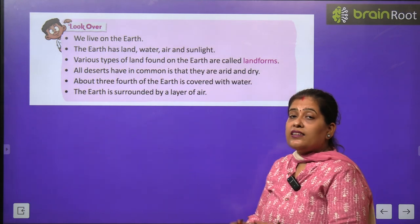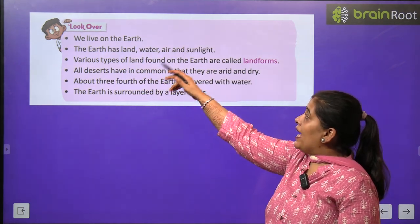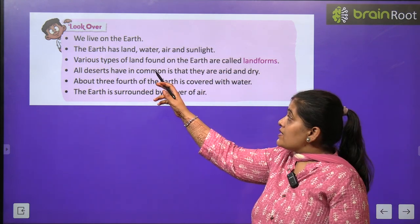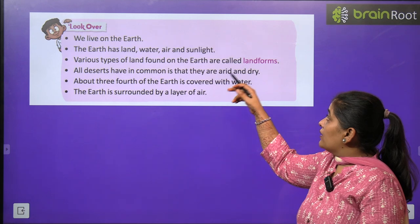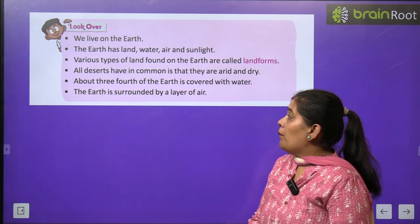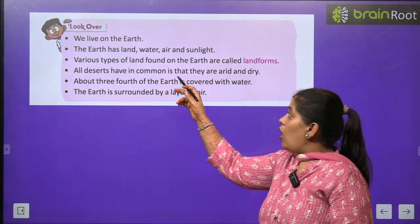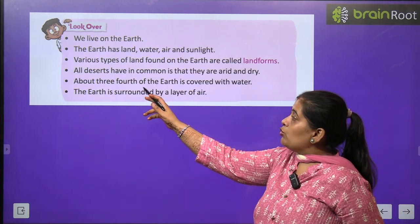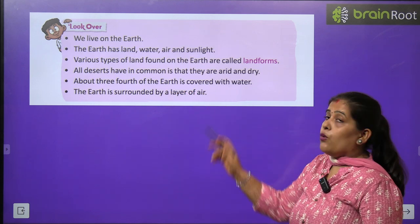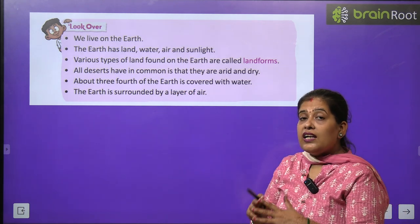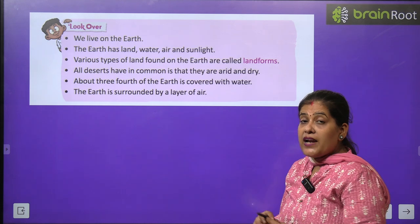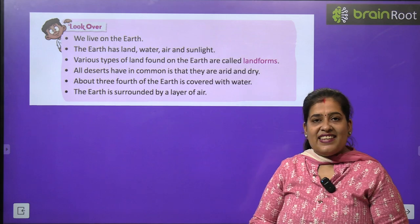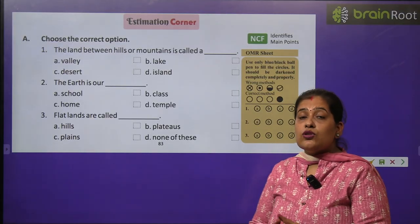Now let's review. We live on the Earth — hum dharti par rehte hain. The Earth has land, water, air and sunlight. Various types of land found on the Earth are called landforms. All deserts have in common that they are arid and dry. About three-fourths of the Earth is covered with water. The Earth is surrounded by a layer of air called the atmosphere.